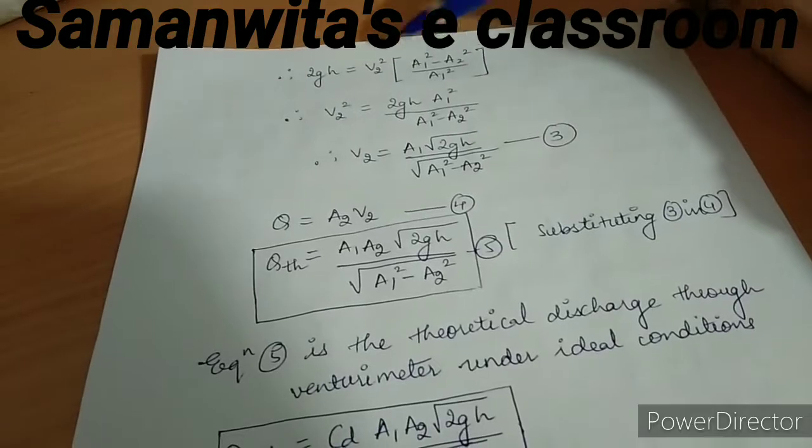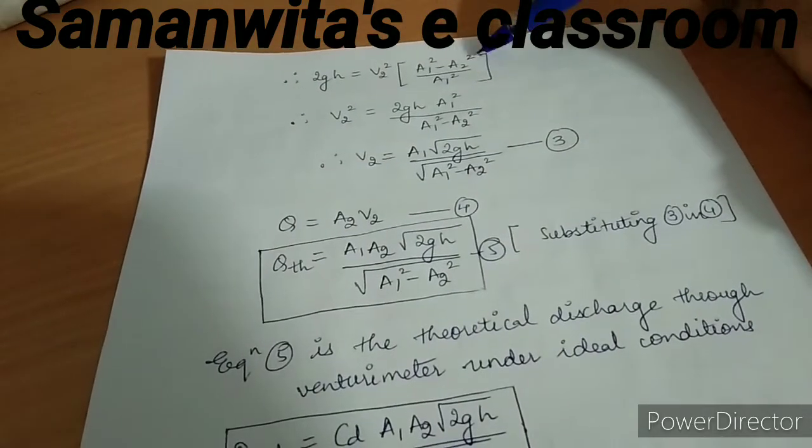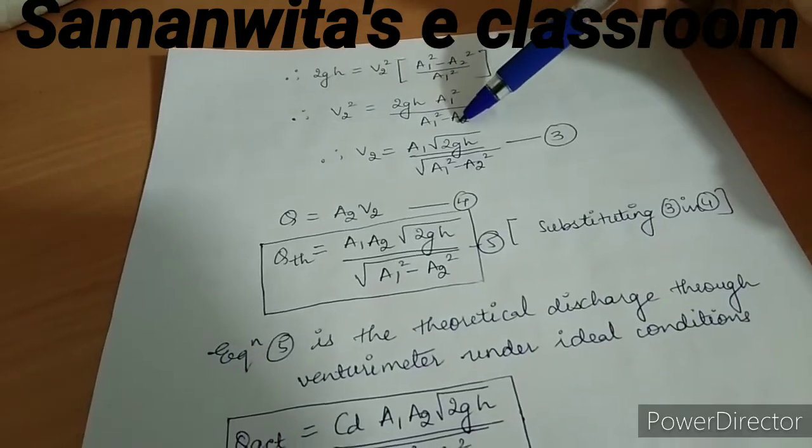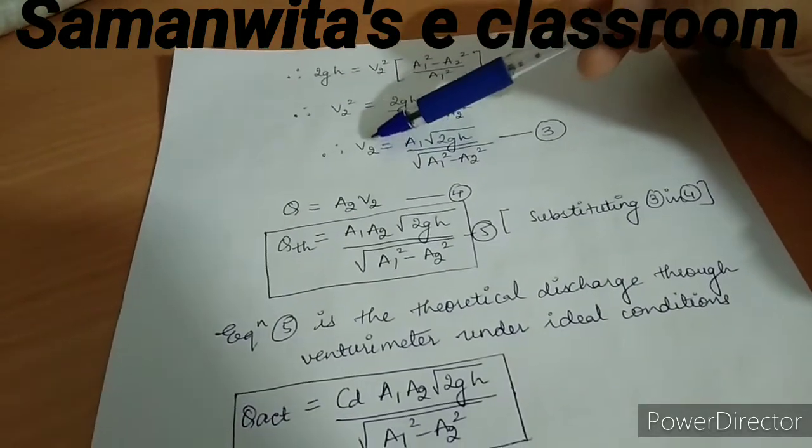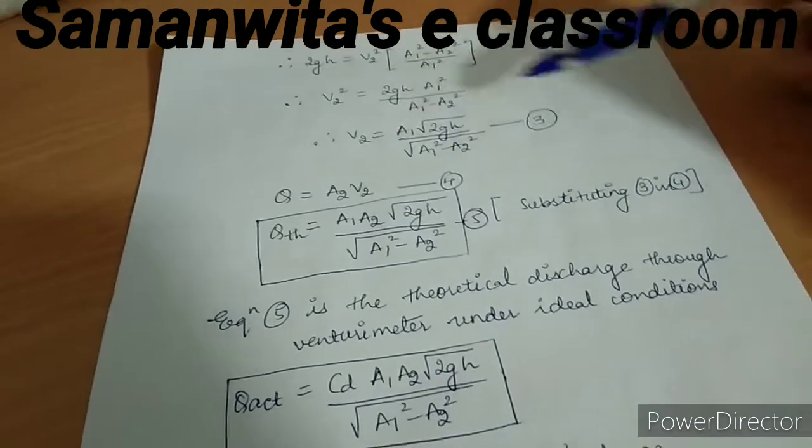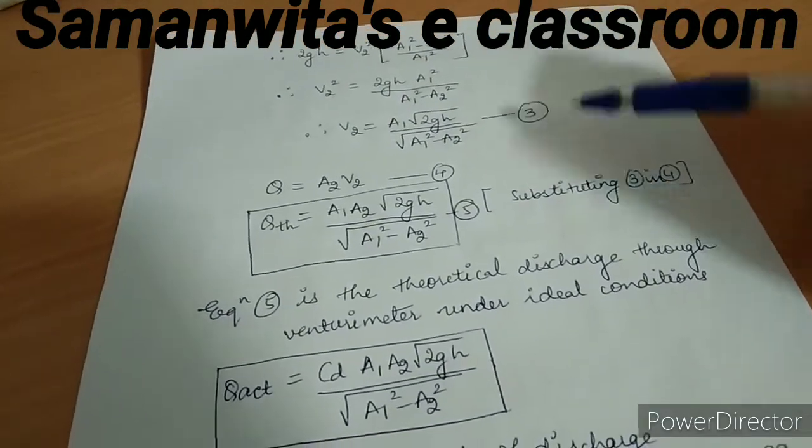2gh = v2² × (A1² - A2²)/A1². I take v2² on one side and rest of the terms on the other side. I want to calculate v2, so I just take the square root on the other end. I mark it as equation 3.